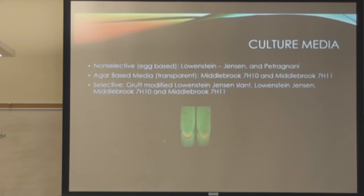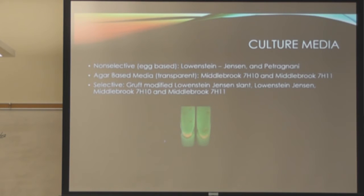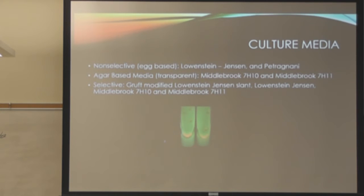For culture media, the Lowenstein-Jensen is egg-based — that's the bright one on the table. In the book they break it down into non-selective, selective, and agar-based media, but you don't need to know those categories. Just be familiar with the names. The most important ones are Lowenstein-Jensen and Middlebrook. The others, not so much.